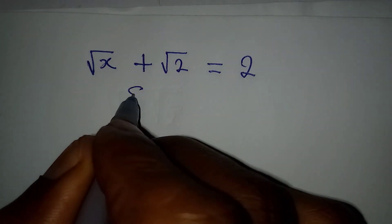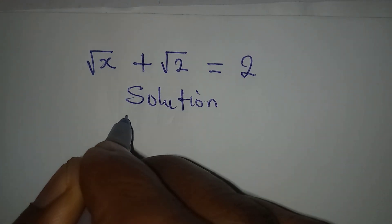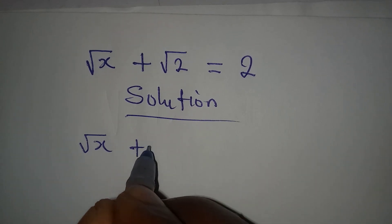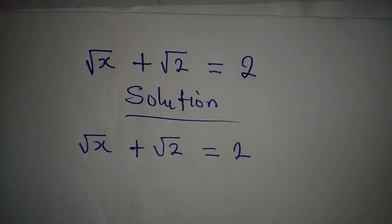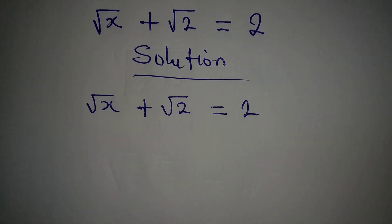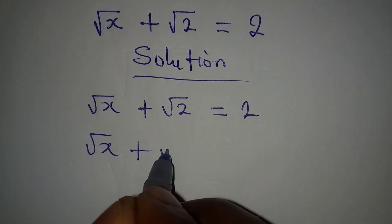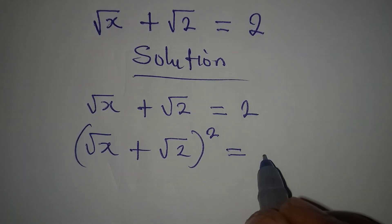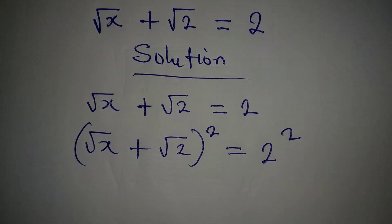Hello everyone, let us deal with this problem very quickly. We have square root of x plus square root of 2 equal to 2. To deal with this, let's square both sides, so we have (√x + √2)² = 2².